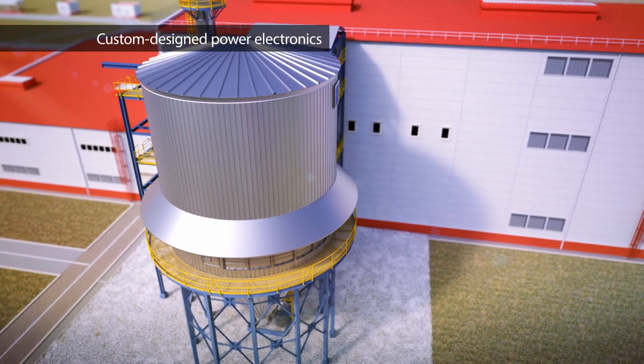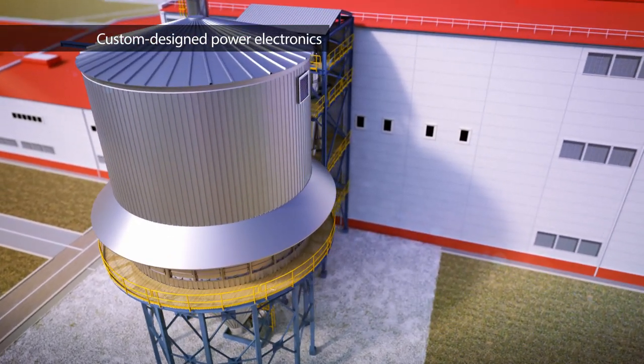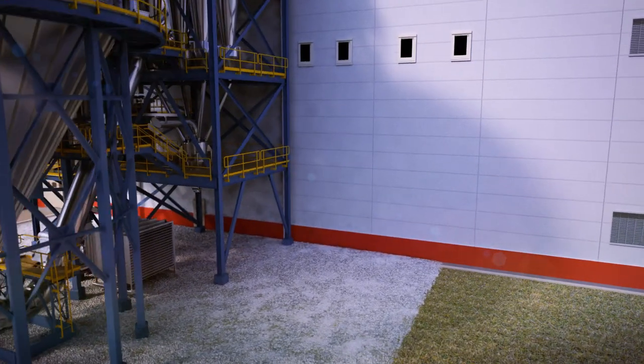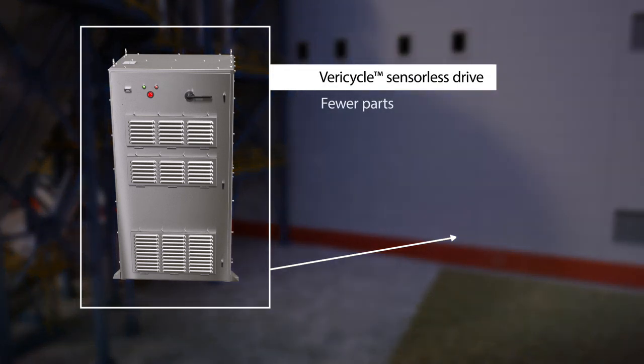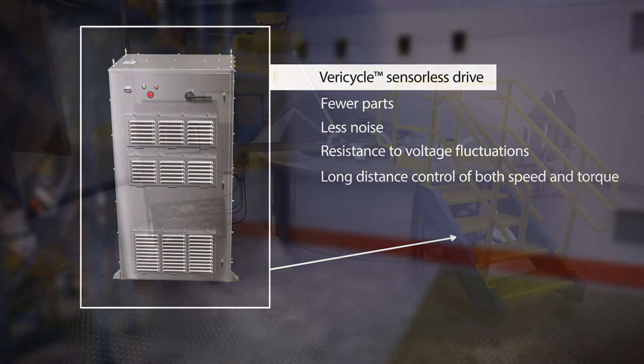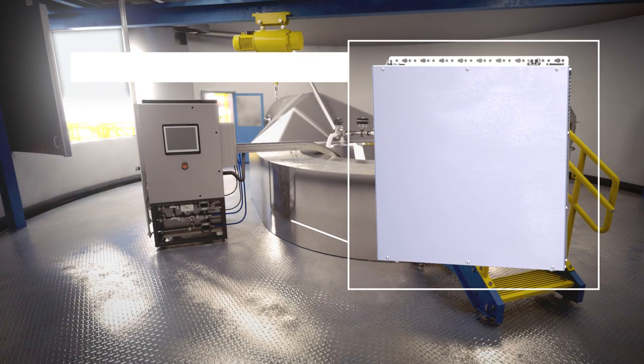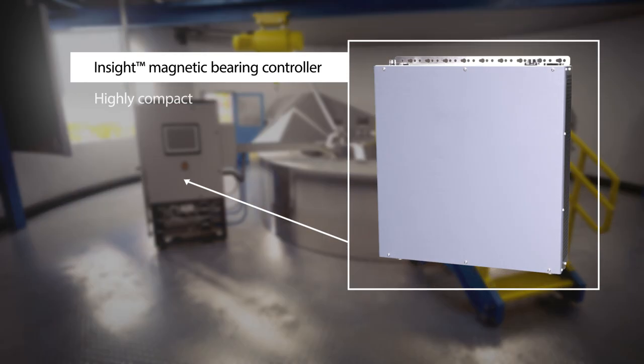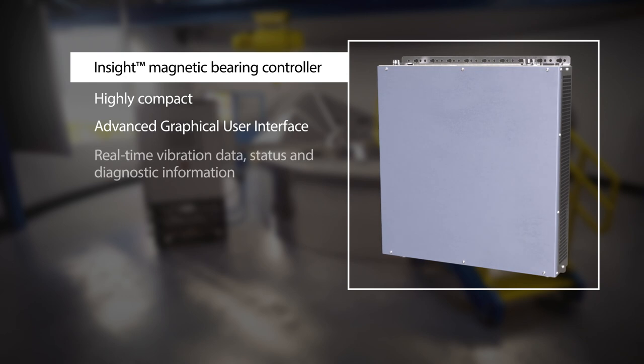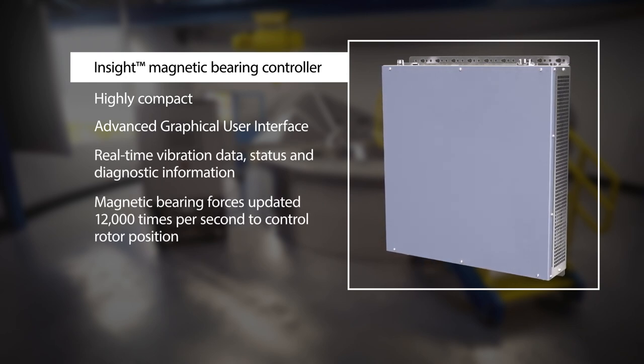Custom-designed power electronics keep everything running at maximum performance. The Calnetics Vericycle sensorless drive adjusts motor speed and torque with no physical sensors, while the InSight magnetic bearing controllers make adjustments up to 12,000 times per second to reliably maintain the proper rotor position.